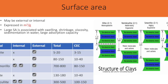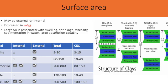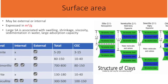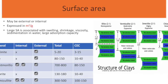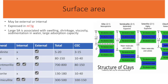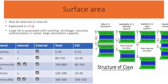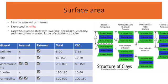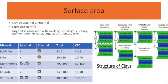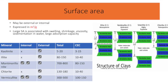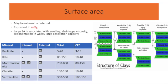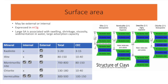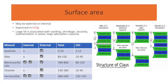Surface area may be external or internal, expressed as m² per gram. Large surface area is associated with swelling, shrinkage, viscosity, sedimentation in water, large adsorption capacity, and hence reactivity. A table shows minerals, whether they have internal or external surface area, total surface area and cation exchange capacity. Kaolinite has only external surface area and hence low CEC. Illite has external surface area, whereas montmorillonite has both internal and external surface area, as does vermiculite. The total surface area in vermiculite and montmorillonite is much greater than for illite, kaolinite or chlorite. Hence, these are key components of reactivity.